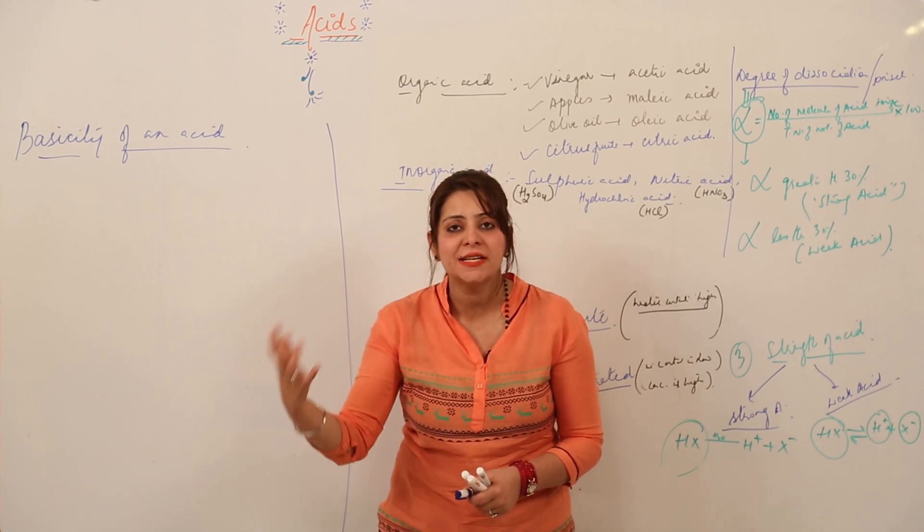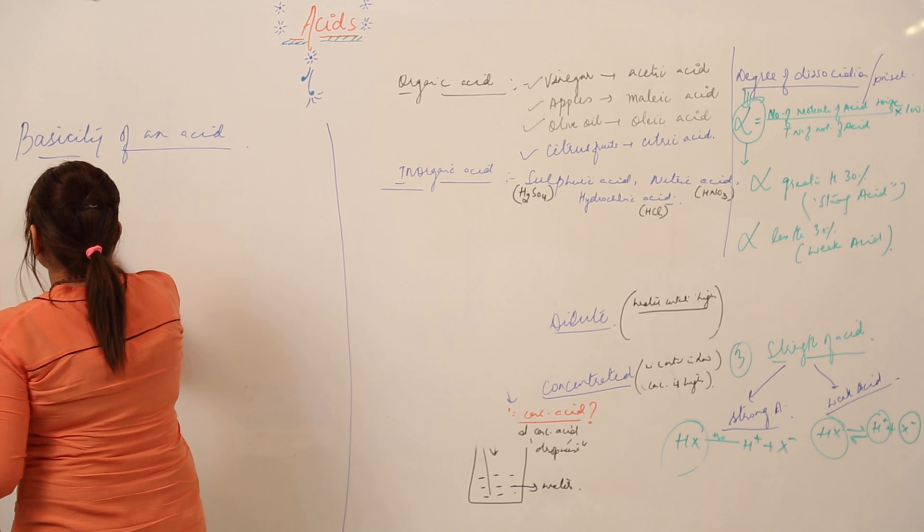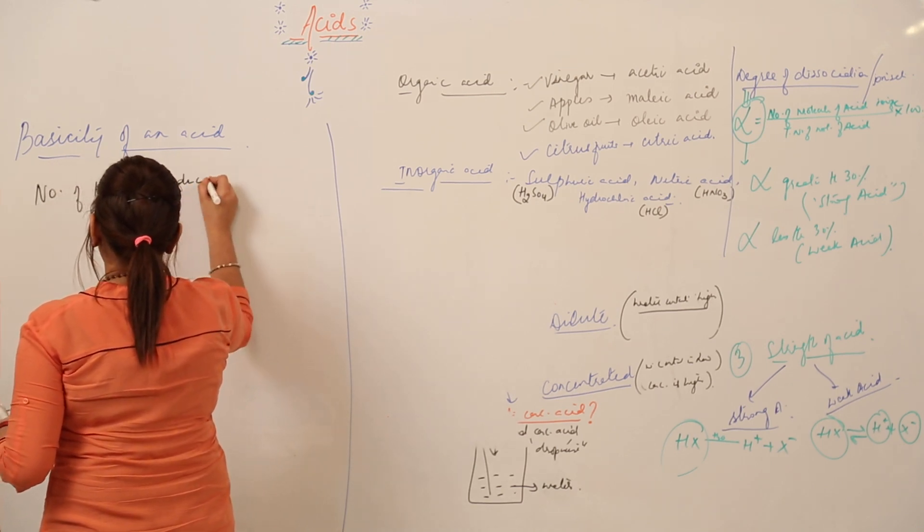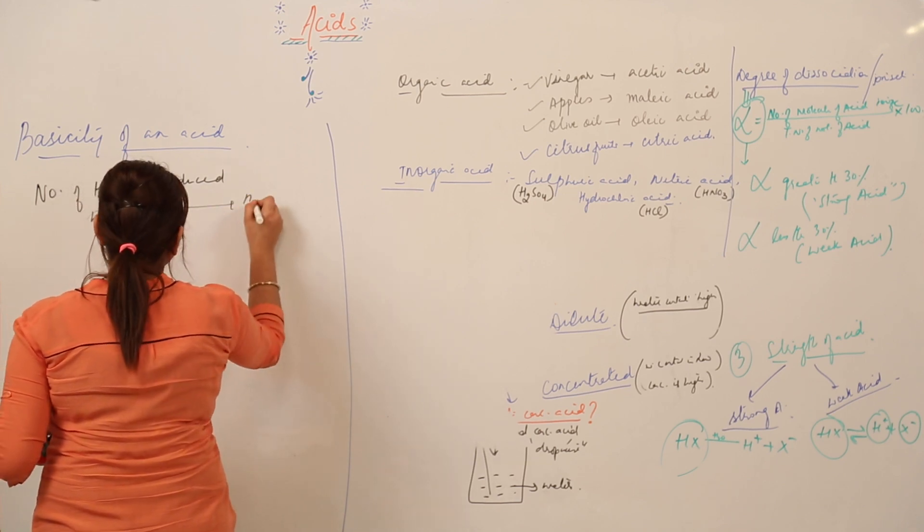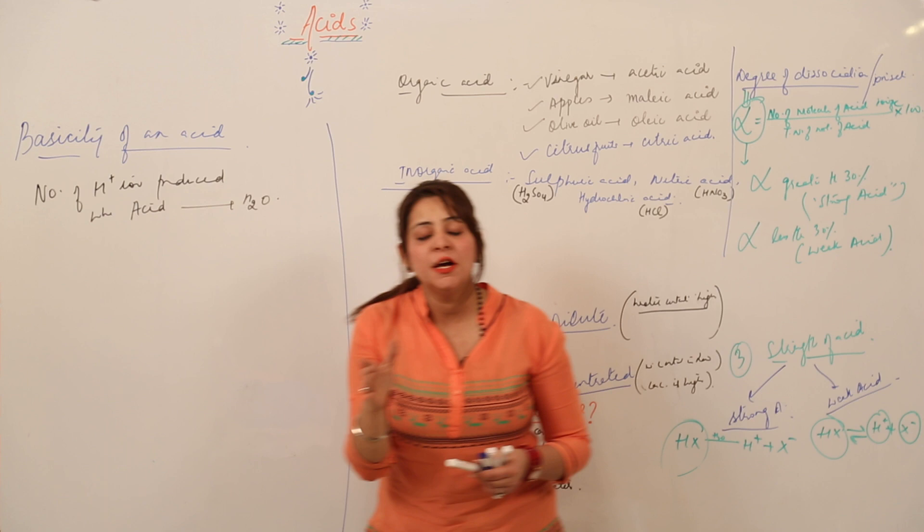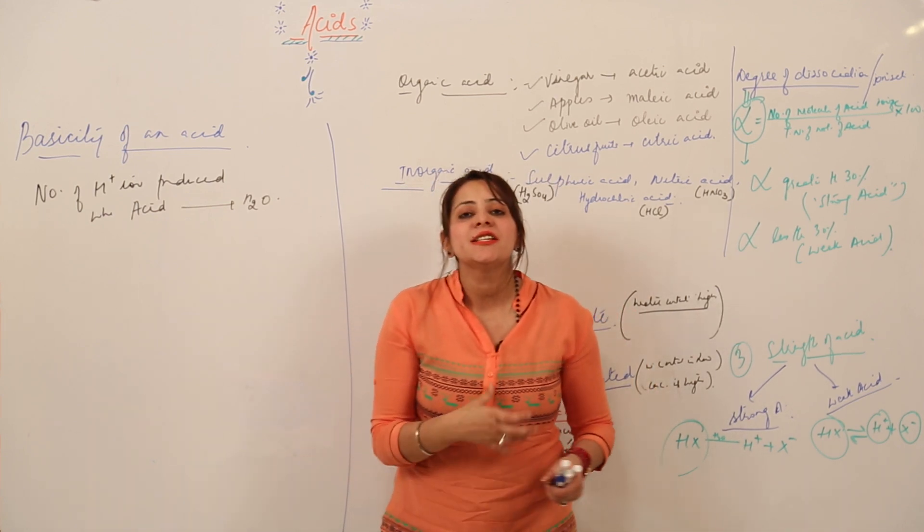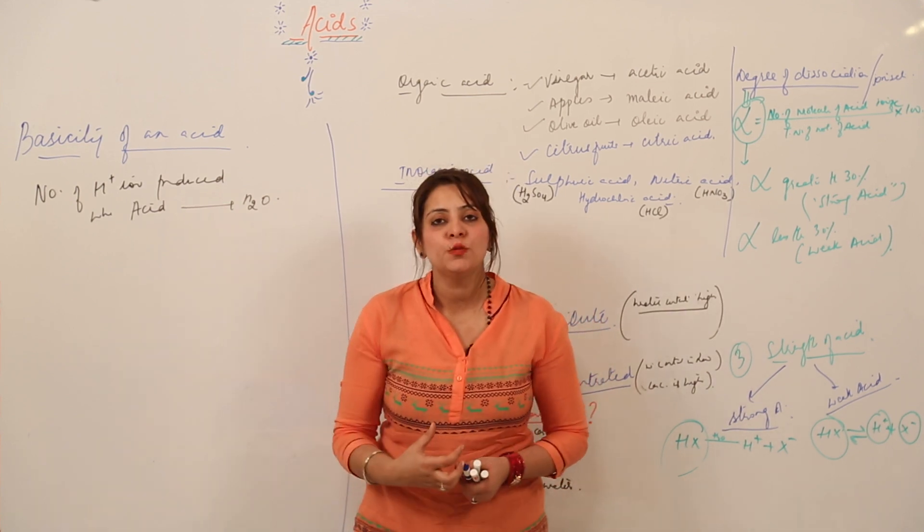Basicity just indicates the number of H+ ions produced when acid is added to the water. So the number of H+ ions which we get when we dissolve acid into the water indicates the basicity. Depending upon the number of H+ ions which an acid gives when it is dissolved in water.